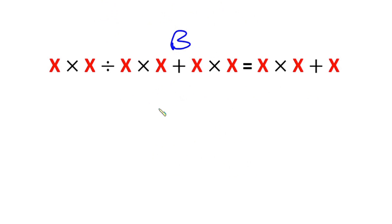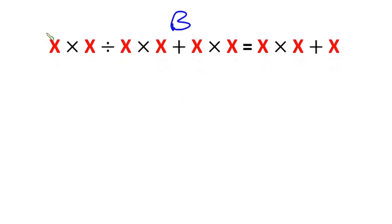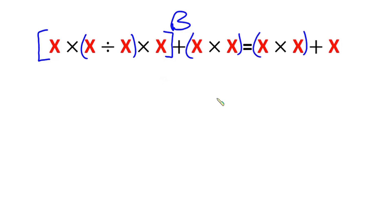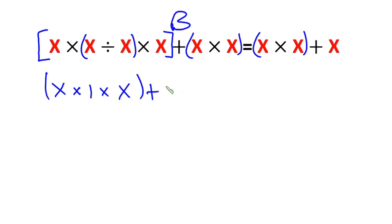Now let's move on to contestant B. According to contestant B, we have big brackets containing small brackets within them. According to him, x times x divided by x is nothing but 1, then times this x over here. And then we have plus x times x, which is x squared. This equals x squared plus x.